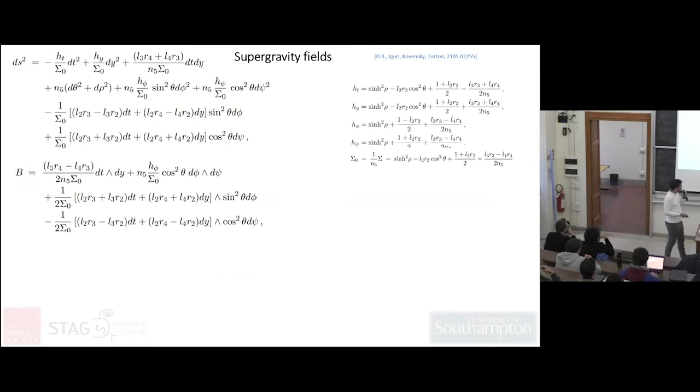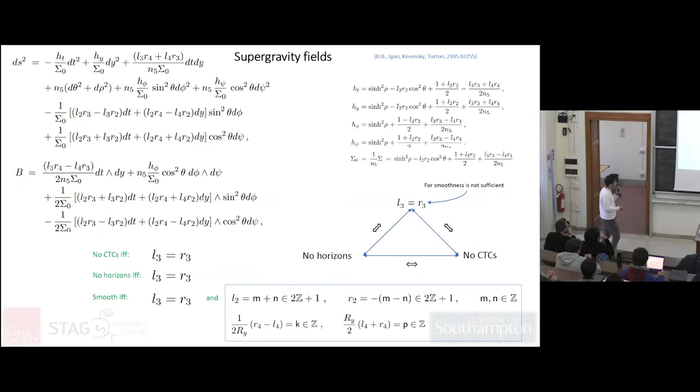You start looking at them and you want to exclude, for instance, CTCs or horizons. You discover that you don't have CTCs if and only if these conditions work, and it's the same condition that kills the horizons in the geometry. Lastly, if you want this to be smooth up to before singularities, you have these conditions.